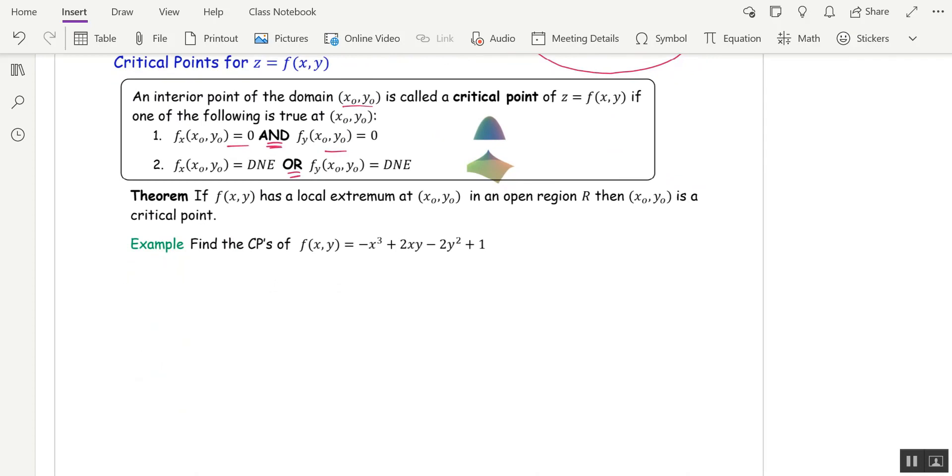So let's go ahead and before we do the second derivative test that will tell us what we have, let's just practice finding critical points. So in this first example, I've got f sub x equal negative 3x squared plus 2y, and I want to set that equal to 0. f sub y is 2x minus 4y, and again, I want to set that equal to 0.